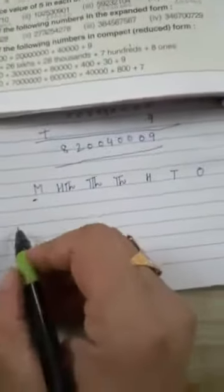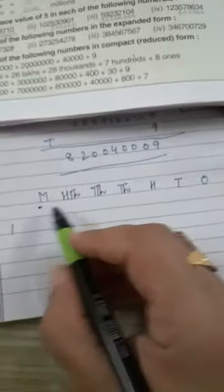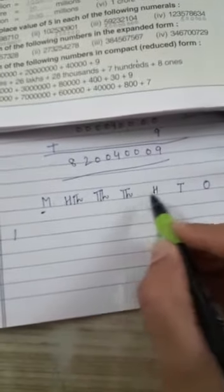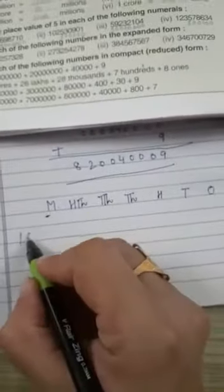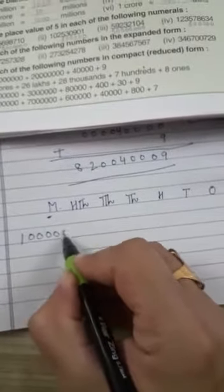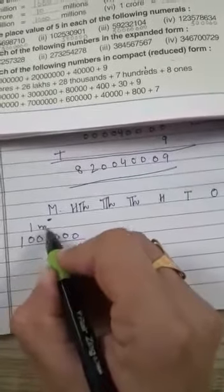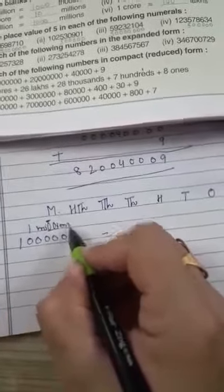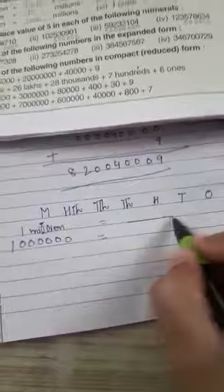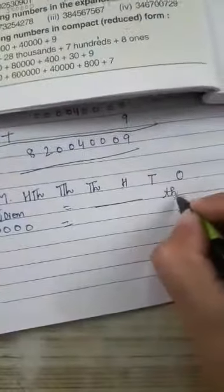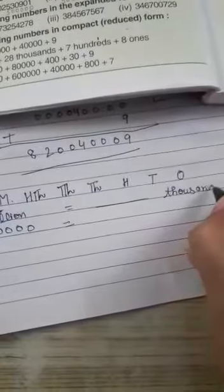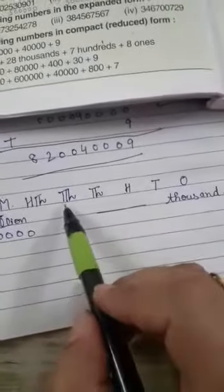In one million, how many zeros? After one: two, three, four, five, six. There are six zeros. That is, one million equals dash dash thousands.